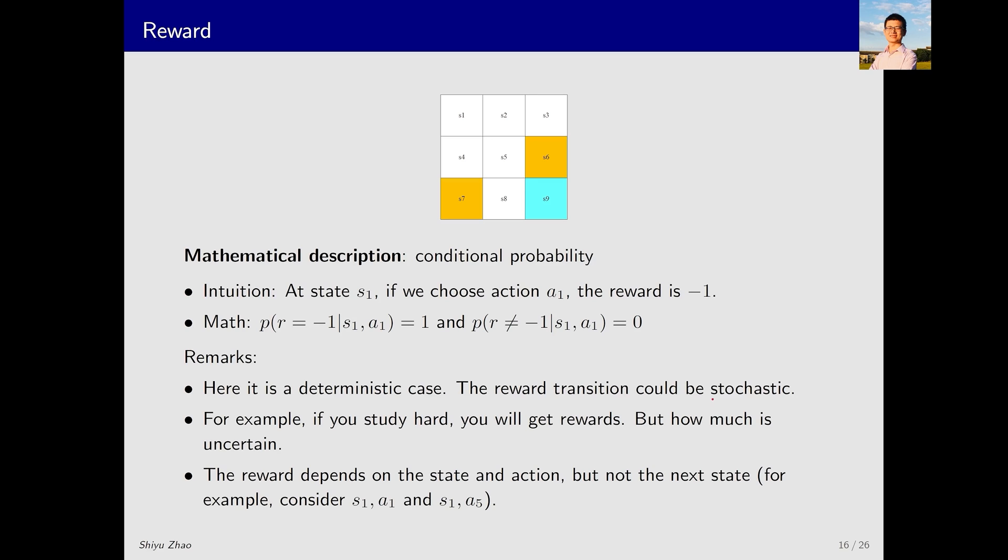There also exist stochastic rewards. For example, if we study very hard, we will receive a high score in an examination, but the exact score may be uncertain. It is worth mentioning that the reward is jointly determined by the current state and action. It also depends on the next state. However, the conditional probability indicates that the reward depends only on the current state and action. This is actually a way of mathematical modeling. Details about this are given in the Q and A section in the first chapter of my book.